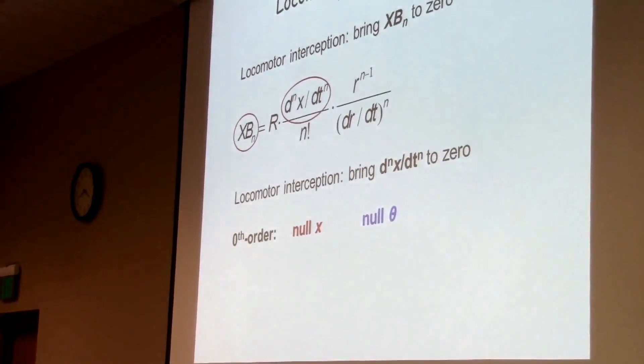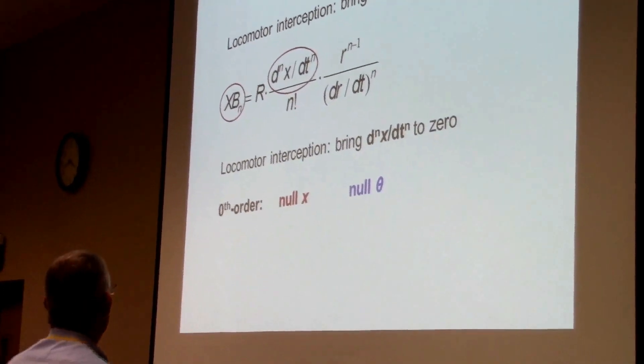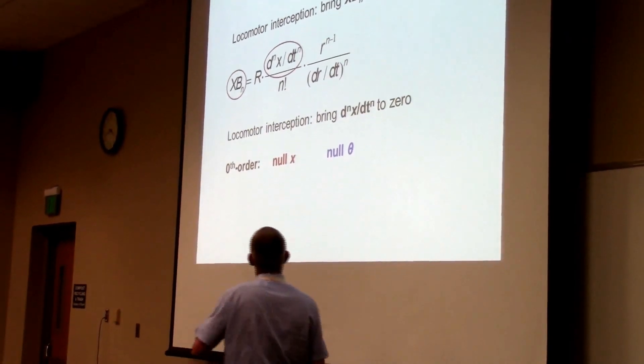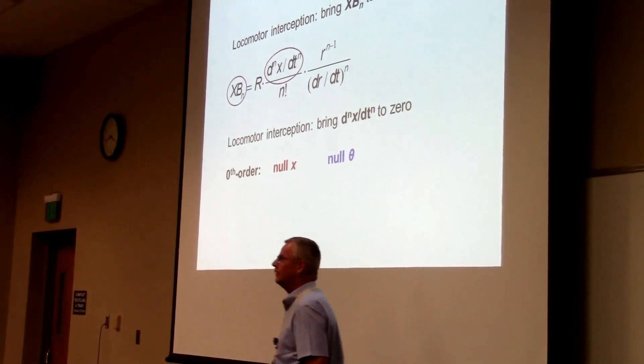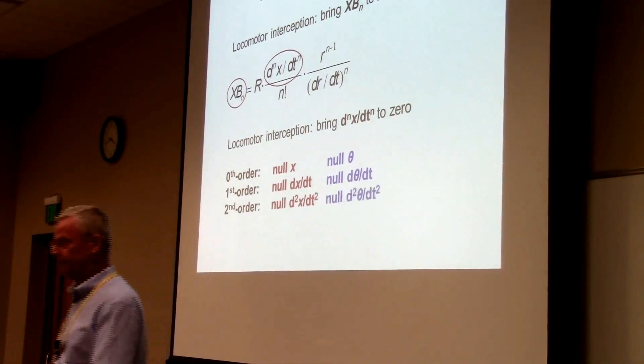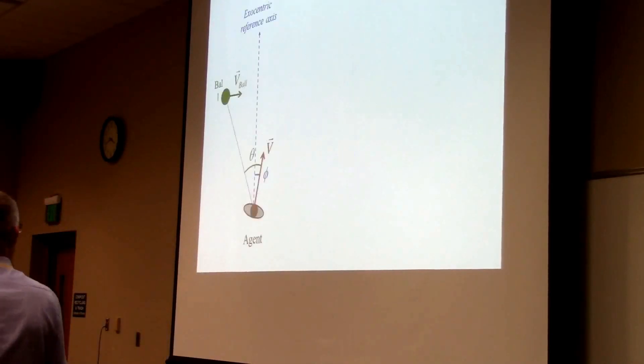And so we can start looking at strategies. The zeroth order, so that's the zeroth derivative of small x or of theta, is, of course, X or theta. The first derivative, the second derivative, et cetera.